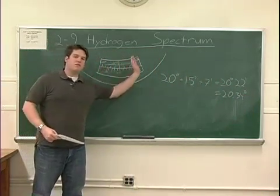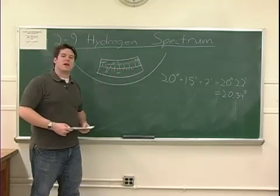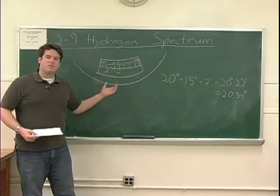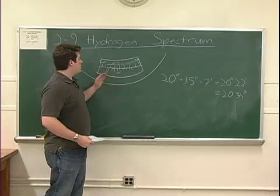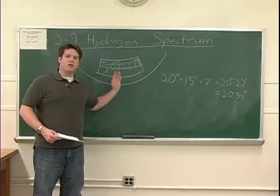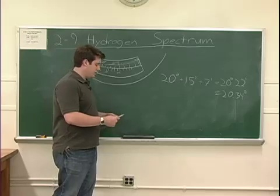You'll want to make measurements to either side of the zero of your scale in order to cancel out any systematic errors. Take one measurement to either side of zero and then take the average of the two angular displacements.